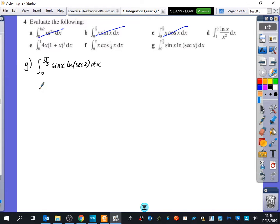Are there any suggestions of which one we should take as u? Let's take the ln of sec x, which means that v dash must be sine x. Probably good to take this one because I think that's going to be easier to differentiate.